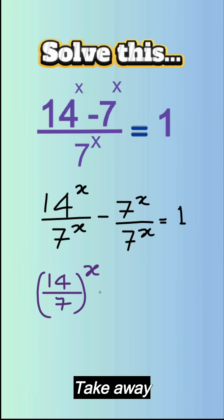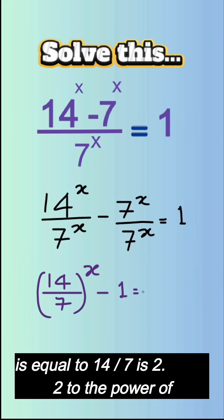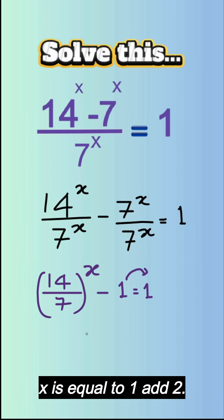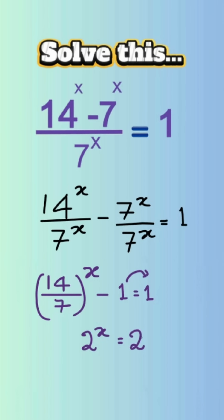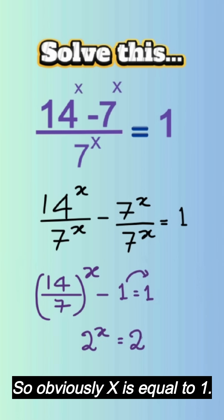14 over 7 is 2. 2 to the power of x is equal to 1 add 1, so obviously x is equal to 1.